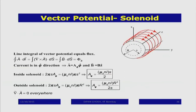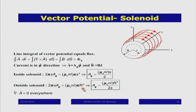More interesting is outside. For s greater than R, the line integral is still 2pi s × A_phi, but the flux is only from the part inside — so the flux is mu_0 n I × pi R², where R is the radius of the solenoid.